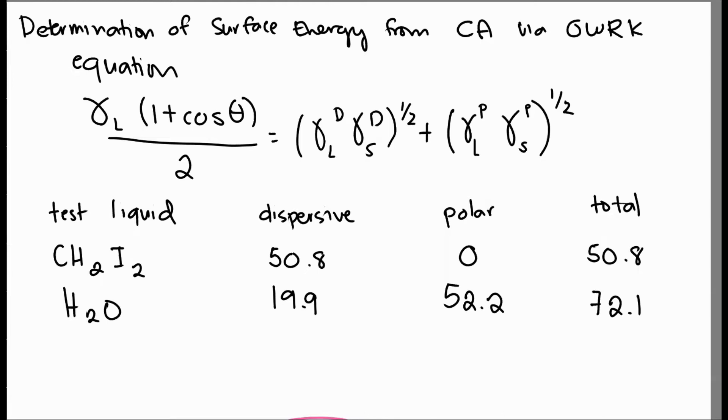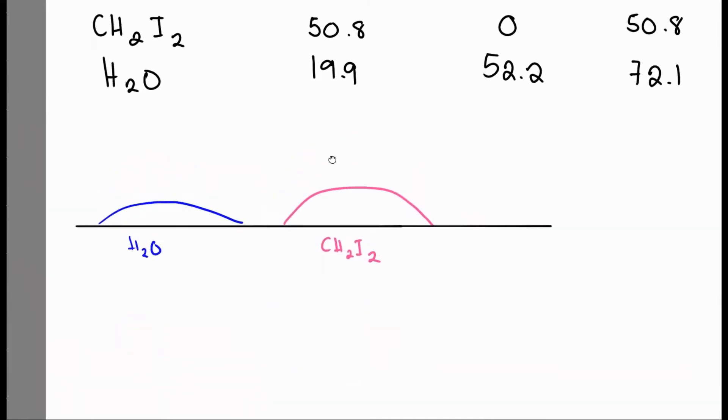To get the surface energy of a solid surface, we usually use the contact angles of two different liquids on that surface, as you will see in experiment number three. For that one, we drop two liquids onto the surface. Usually they have different polarity. We have water and CH2I2 for this example.